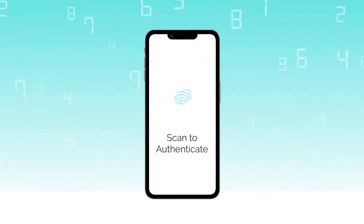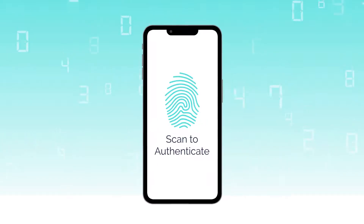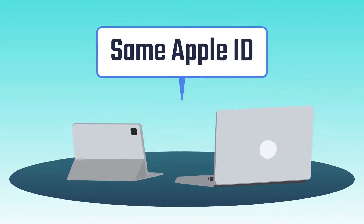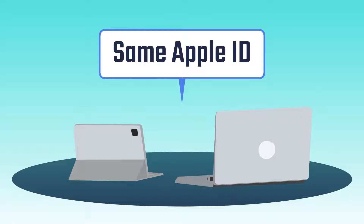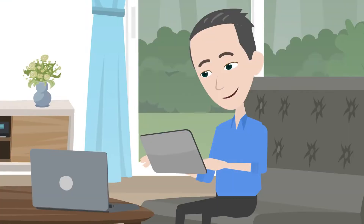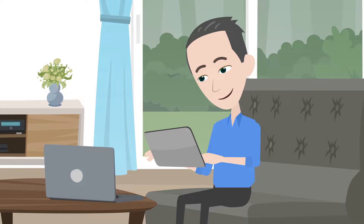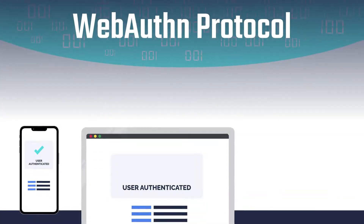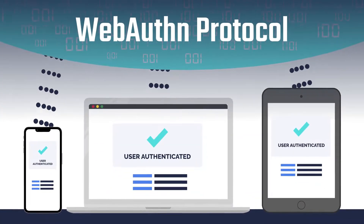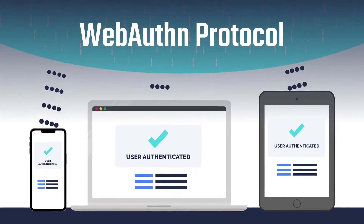For instance, if a website has registered the user's iPhone for WebAuthN and the user has two other devices with the same Apple ID, the private key will roam automatically from the iPhone to these other devices. So when the user goes to the website from any of these devices, the website can use the WebAuthN protocol to authenticate the user without the need to register all these other devices.